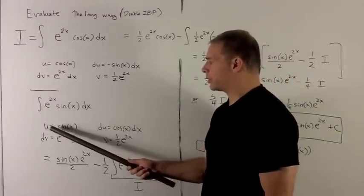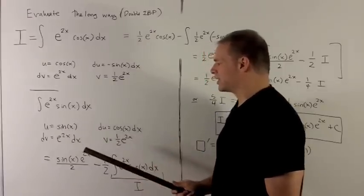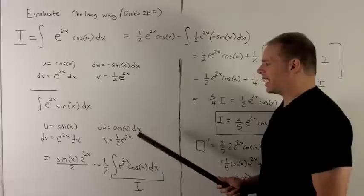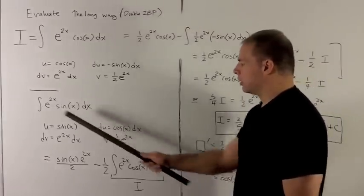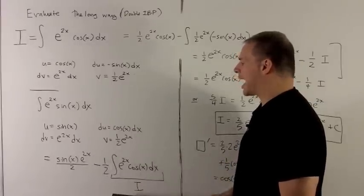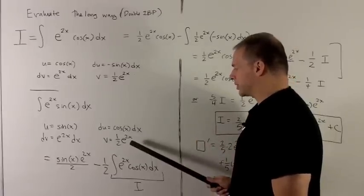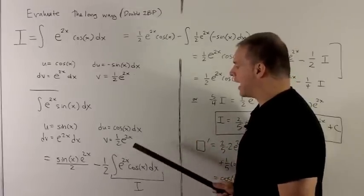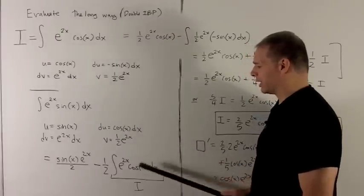Here, we just proceed as before. The trig function goes in for u, dv is e to the 2x dx, du is cosine x dx, and v is again a half e to the 2x. Multiply along the diagonal, sine x e to the 2x over 2, then subtract what we get when we integrate multiplying up. So that's going to be minus, I'll pull the half out, and then I have e to the 2x cosine x dx under the integral sign.